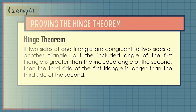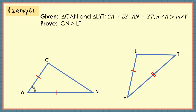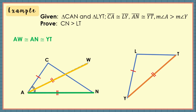Let us have an example. Given triangle CAN and triangle LYT, wherein side CA is congruent to side LY and side AN is congruent to side YT, and the measure of angle A is greater than the measure of angle Y. To prove this, we need two additional constructions: segment AW such that AW is congruent to AN and YT, and segment AW is between side AC and side AN with angle CAW congruent to angle LYT.